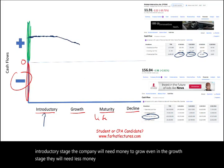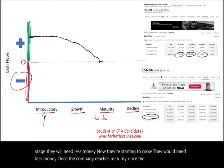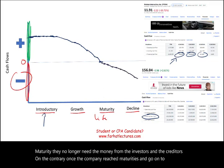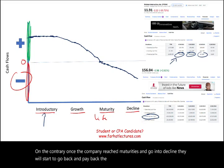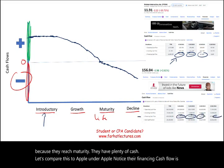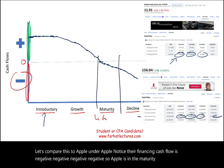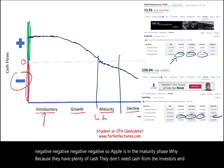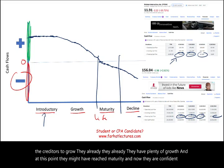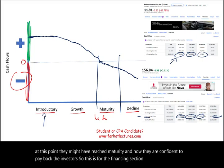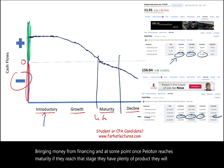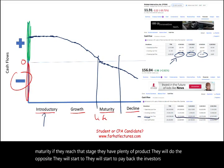Once the company reaches maturity, they no longer need money from investors and creditors. On the contrary, once they reach maturity and go into decline, they will start to pay back the investors and the creditors, because they have plenty of cash. Let's compare this to Apple — notice Apple's financing cash flow is negative. So Apple is in the maturity phase: they have plenty of cash and don't need capital from investors or creditors to grow. They've already reached maturity and are now paying back the investors. So at some point, once Peloton reaches maturity, they will do the opposite — start paying back investors, just like Apple is doing.